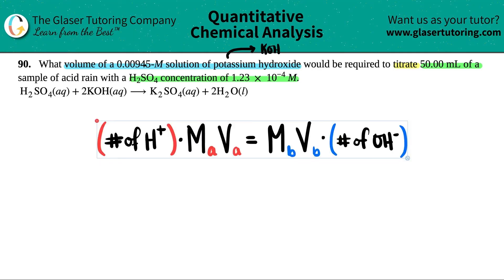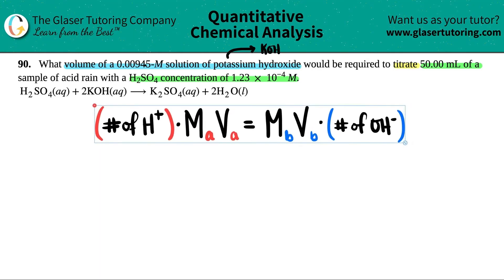So it makes it very simple. It basically goes back to M1V1 equals M2V2, but we're just switching it up here. We now have MAVA, and A stands for the acid. So this is the acid side. And then MBVB, this is the base side. B stands for base.